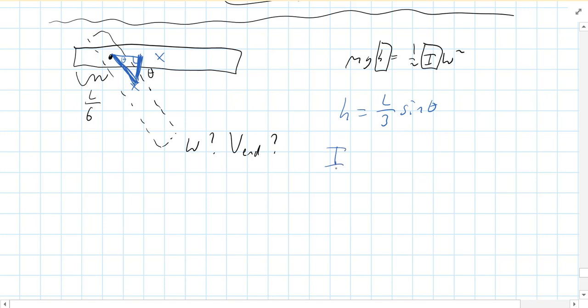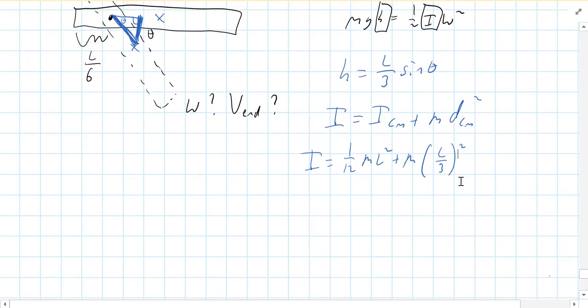Now, how about I? Well, for this, we have to use parallel axis theorem. So, that's ICM plus M DCM squared. So, I would be, for the center of mass of a bar, we got 1 12th ML squared plus M. So, the distance we just found, it's L over 3. That's from the center of mass to the pivot, and we have to square that. And we get ML squared and then times a 12th plus a 9th. I got to get common denominators. This would be 3 over 36 and 4 over 36. So, this would be 7 over 36 ML squared. So, that's I.